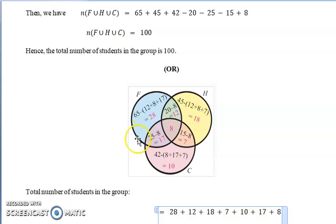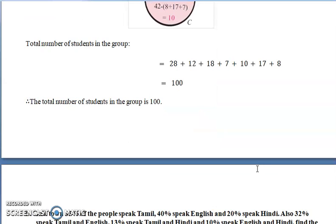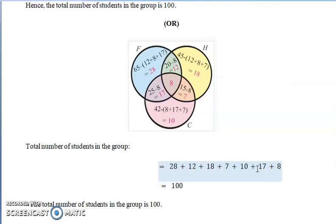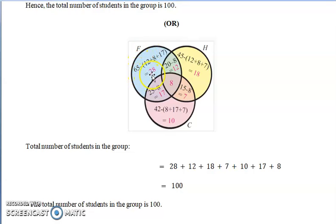In the same manner, using a Venn diagram — just like the previous problem — we can also solve this. In the Venn diagram, F indicates football, H indicates hockey, C indicates cricket. Replace the values at their intersections, subtract the intersection values from the original set values, and add the resulting regions. That final sum gives 100, which is the total number of students.